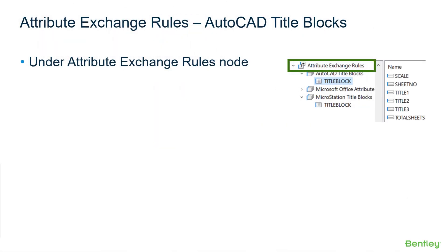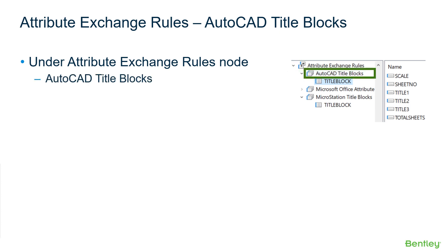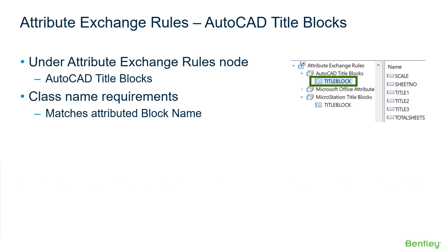Attribute Exchange rules and settings for AutoCAD applications are administered within ProjectWise Administrator. It is located under the Attribute Exchange rules node called AutoCAD title blocks. For AutoCAD applications, when creating an attribute class, the name must match an attributed block within the drawing. Attribute Exchange will search the drawings for all blocks that match any of the AutoCAD title block classes. For example, a class could be created for an attributed block for title block information, and another class for an attributed block for station offset matchlines.